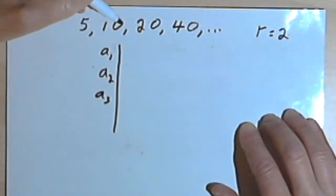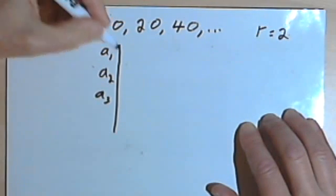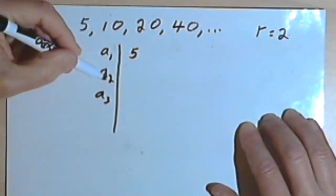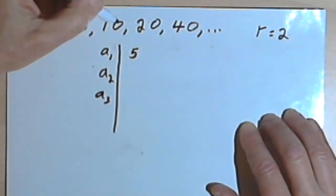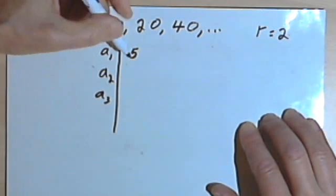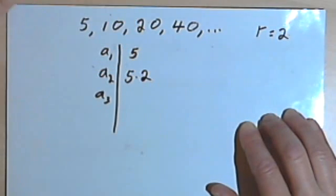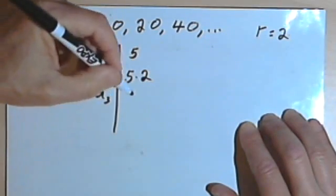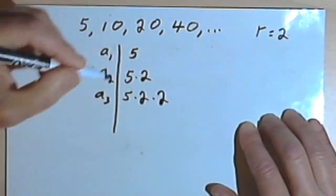And then the second column, I'll write what that term is. So the first term, a sub 1, is a 5. The second term, a sub 2, is 10. But I get that 10 by multiplying the 5 by the common ratio. So let's just write 5 times 2. Now if I take that term and multiply it by the common ratio, I'll get the third term. So that would be 5 times 2 times 2 again.